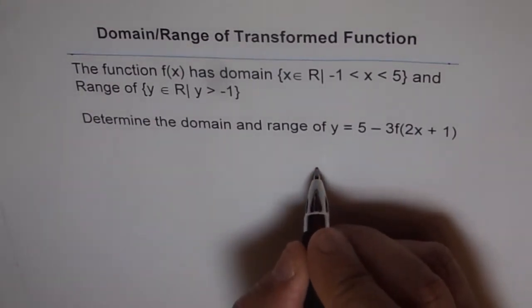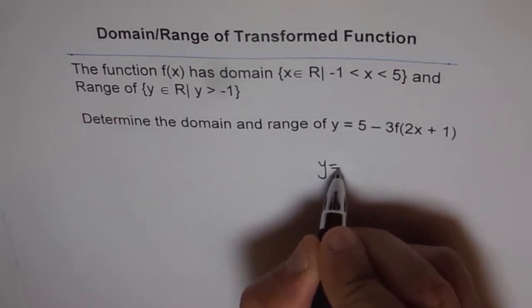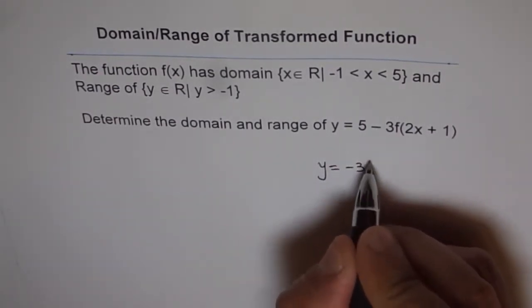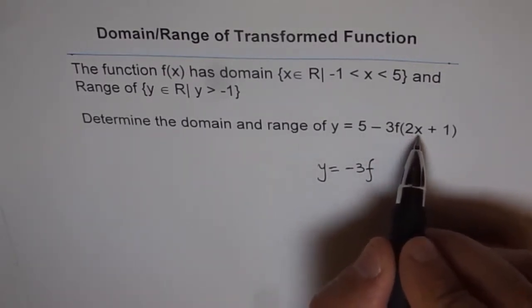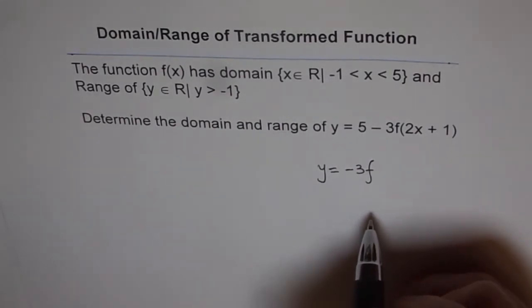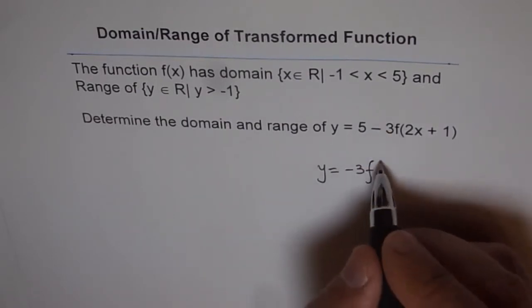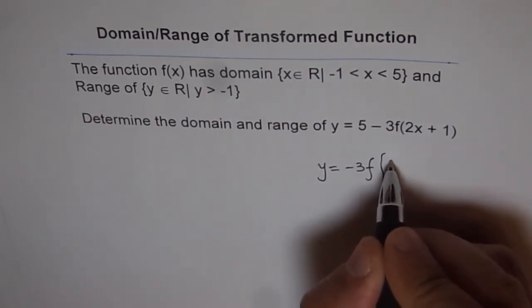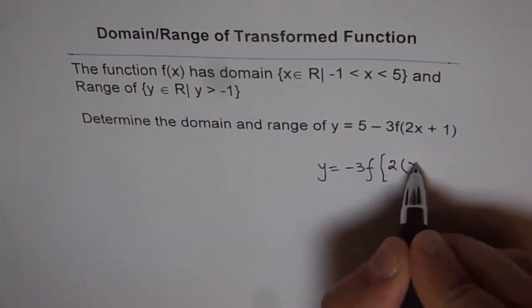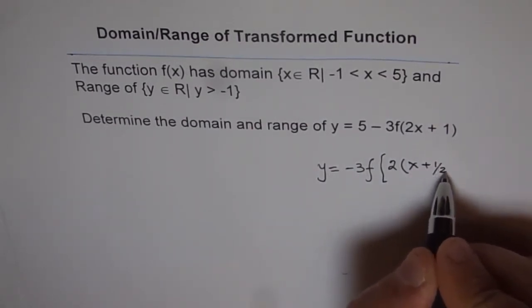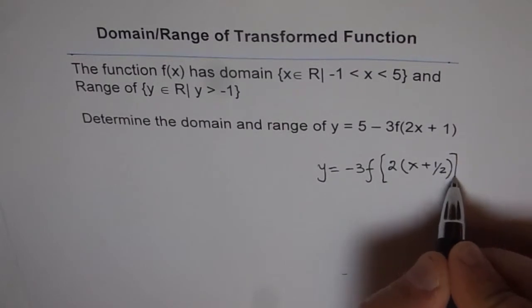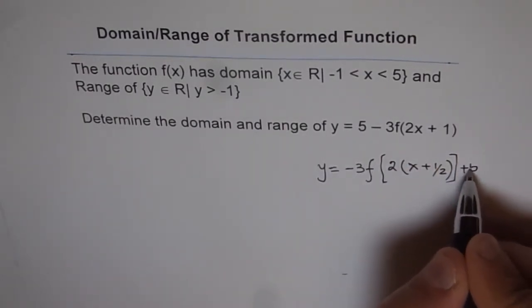That is like this, y equals minus 3f of, and then here we have 2x, coefficient of x is 2. Whenever it is like that coefficient should be always 1, we need to factor. So factor this 2, so you get 2 times x and then this will become plus half when you factor this. And plus 5, write it on this side.